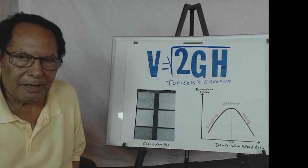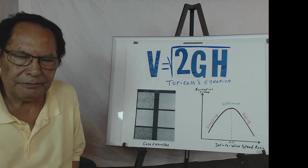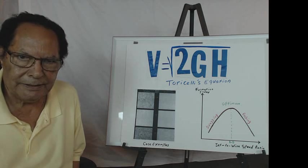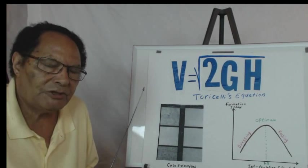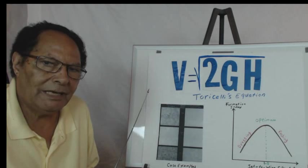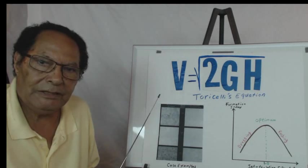I am going to talk about that equation which is quite interesting. What we call V equals square root of 2GH. If you are familiar with some fluid dynamics, that equation is known as Torricelli's equation.